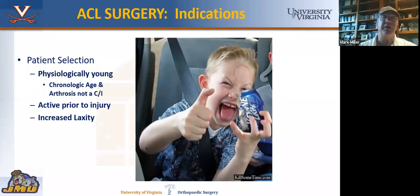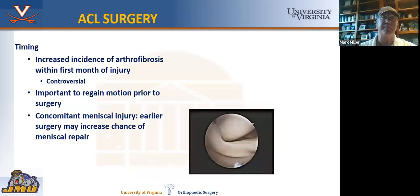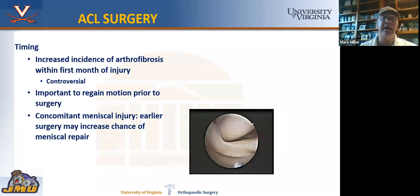Some authors advocate for non-operative treatment, especially in Europe, and say they had similar outcomes at five years. The problem is people in the United States aren't willing to wait for this long recovery, and they don't want to risk having a non-functional knee, particularly if they're an athlete. We try to select patients who are young — at least physiologically young — and active. Nowadays, patients are very active even into their 50s and 60s. The timing is somewhat controversial, but it's important to regain motion, get quad tone back, and get effusion under control. That's what prehab is all about. If you have a locked knee, like a bucket handle tear, you may want to operate a little sooner.